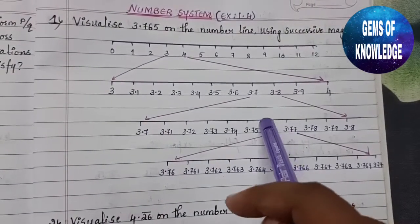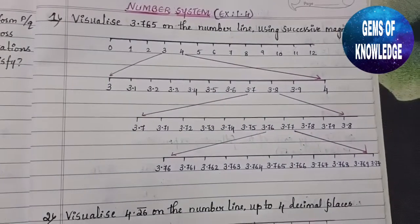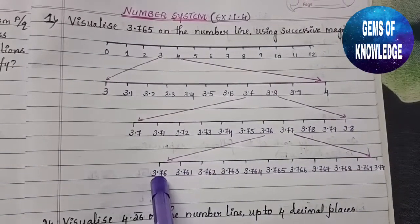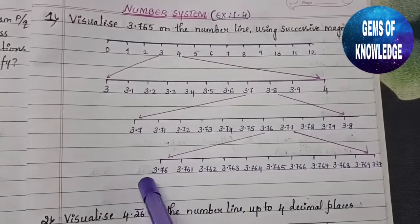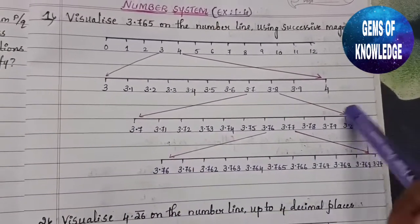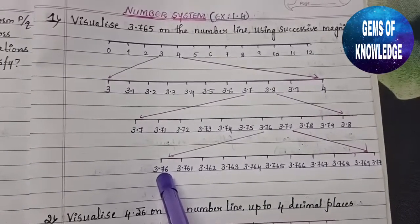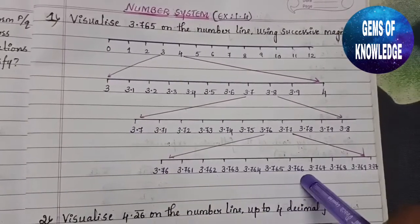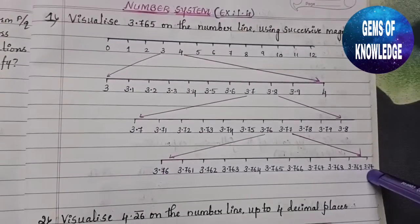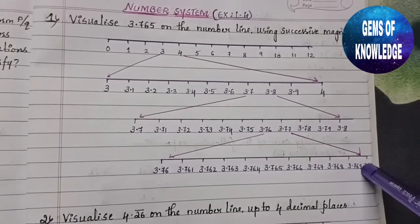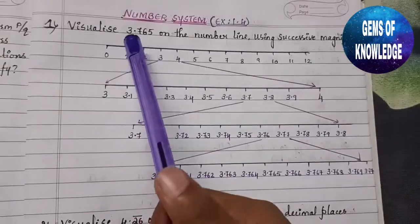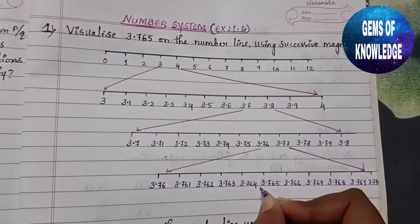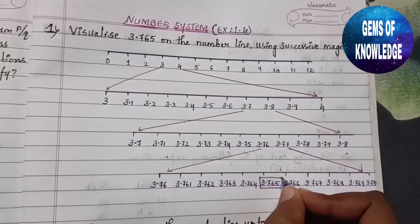We enlarge the part between 3.76 and 3.77. Between these two numbers there are many values: 3.760, 3.761, 3.762, 3.763, 3.764, 3.765, 3.766, 3.767, 3.768, 3.769, and 3.770. According to our given number, which is 3.765, we just need to show this point and the answer is complete.